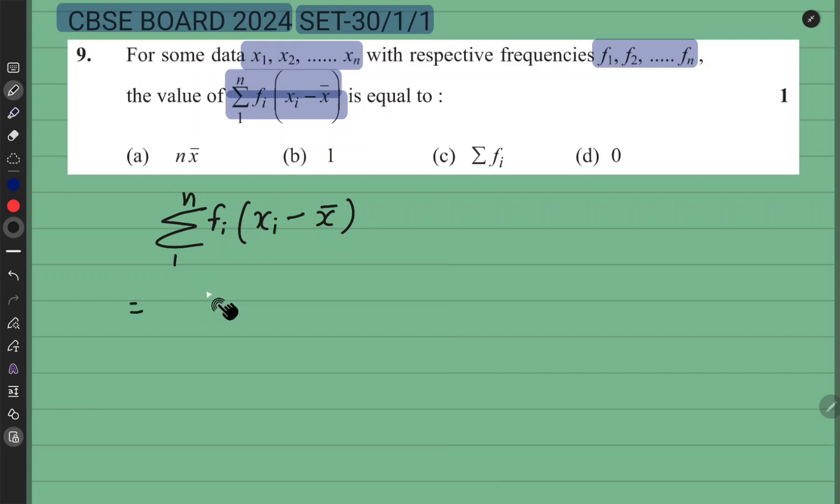Toh ye fi ko anndar multiply kar djeta hai. Toh ye hua summation 1 to n. Kya hua fi xi minus summation. Achso, summation baad me dekh leenghe. Fi ko anndar multiply gya. Fi xi or fi x bar.